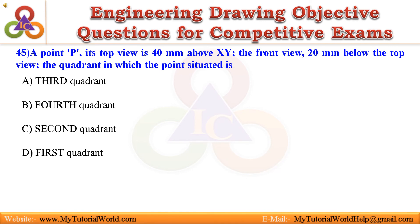45. A point P — its top view is 40 mm above the reference line, the front view is 20 mm below the top view. The quadrant in which the point is situated is: A. Third quadrant, B. Fourth quadrant, C. Second quadrant, D. First quadrant. Answer is First quadrant.